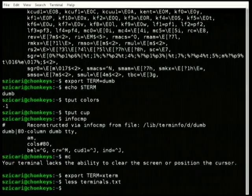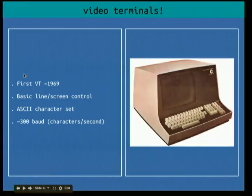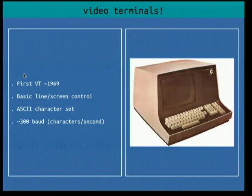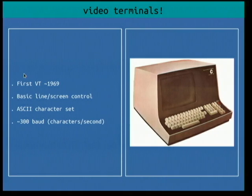Let's talk a little more about video terminals. The first terminal came out around 1969 — the Datapoint 3300, at least the first one I could find. It offered basic line editing like backspace, a clear line, you could clear the screen, and you could move the cursor to any point on the screen. It was quite literally just a monitor and keyboard attached to a computer via an RS-232 cable. It used the ASCII character set, which was an improvement over the Baudot code — a 5-bit code — and it ran at about 300 baud.